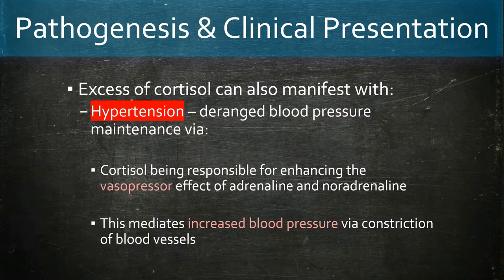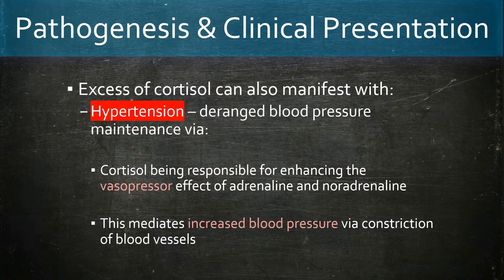Cortisol enhances the vasopressor effect of adrenaline and noradrenaline, resulting in constriction of blood vessels, and when in excess, this contributes to an elevation in blood pressure. The opposite is seen in Addison's disease, where there is a deficiency in cortisol — patients typically experience dizziness with orthostasis, contributed to by aldosterone deficiency causing volume depletion via sodium excretion and potassium retention.